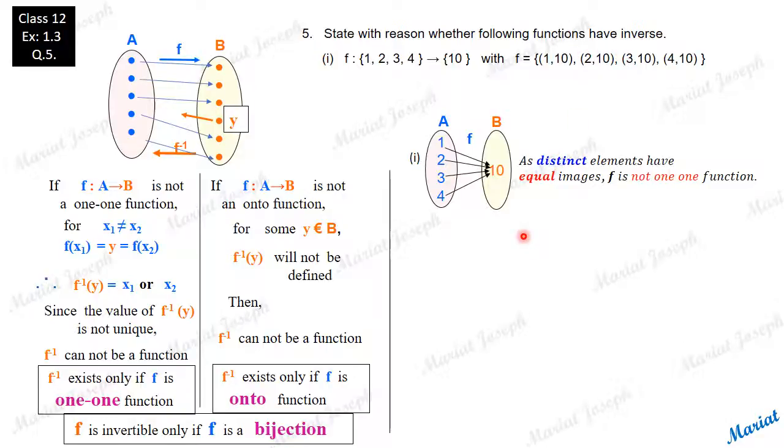So we conclude as distinct elements have equal images, f is not one-one function. So f is not invertible. Hence, f has no inverse function.